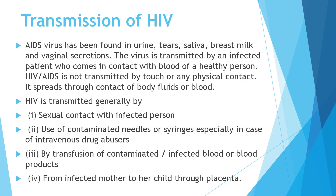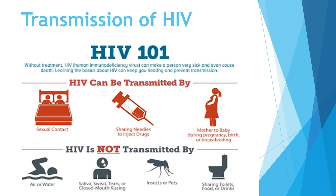HIV is transmitted generally by sexual contact with an infected person, use of contaminated needles and syringes — especially in cases of intravenous drug abuse — by transfusion of contaminated or infected blood and blood products, and from the infected mother to the child through the placenta. HIV can also be transmitted by breastfeeding.